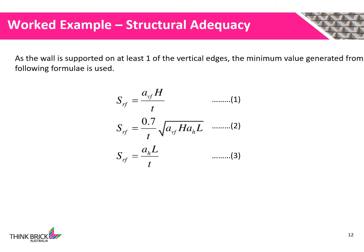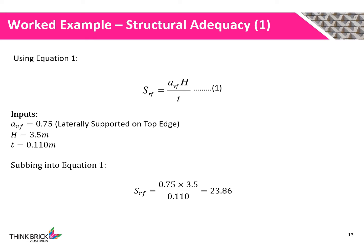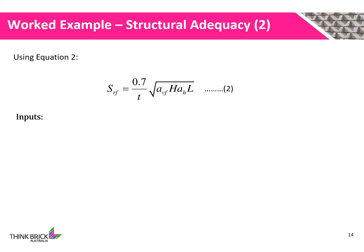The minimum value generated from the following formulas shall be used. We firstly evaluate equation 1. As the wall is laterally supported on the top edge, the vertical span coefficient has been specified as 0.75. We know the height of the wall is 3.5m and the thickness of the wall is 110mm. Hence, we evaluate the slenderness ratio using equation 1 to be 23.86.